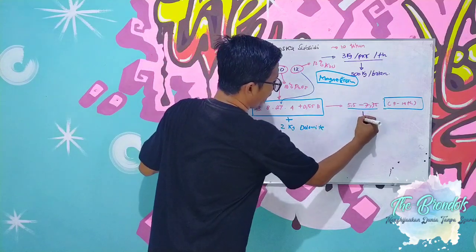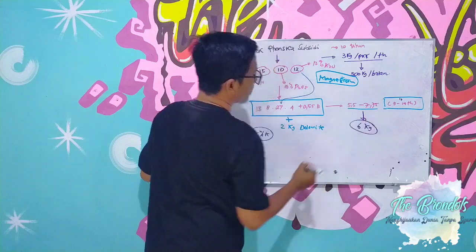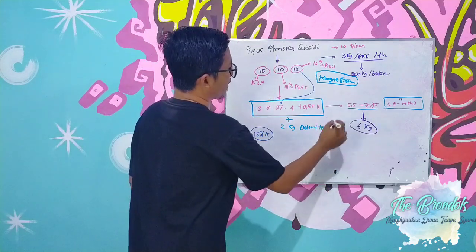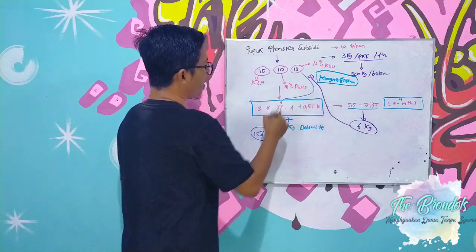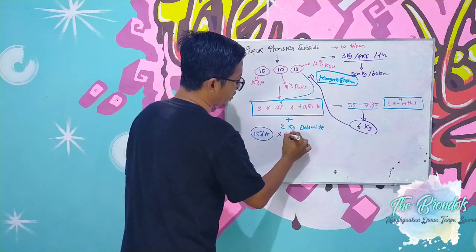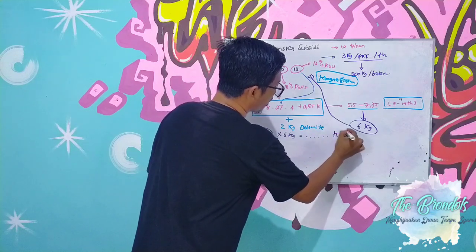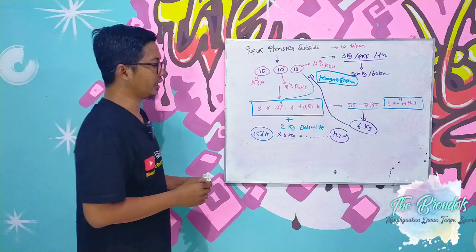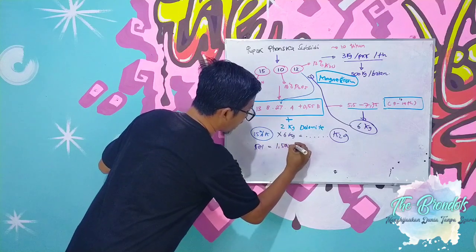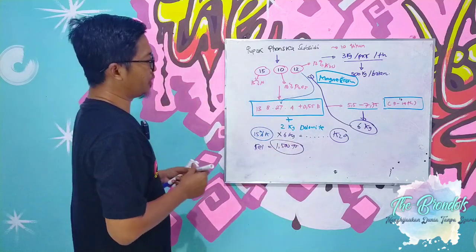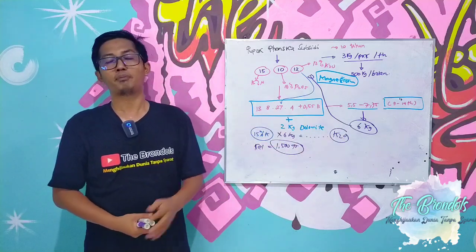If we break it down, say at 10 years we want to use 6 kg. When we want to use 6 kg, then the deficit must be fulfilled. The deficit is 15% multiplied by 6 kg. So this is what must be fulfilled in terms of nutrients through Ponska. If I calculate, it equals 1,150 grams or 1.15 kg of KCL that must be added when we use 6 kg of NPK Ponska.